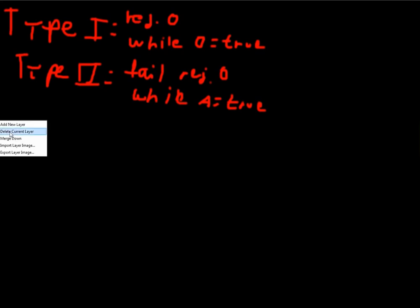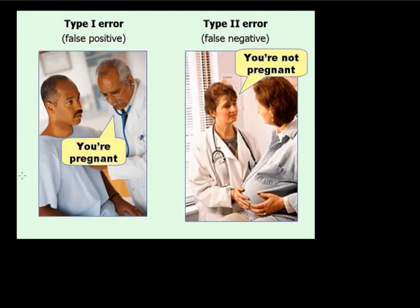A great way to remember this is this little picture right here. The doctor is testing for pregnancy. The null hypothesis would be the person is not pregnant, and the alternative hypothesis would be the person is pregnant. In the first picture, the doctor is falsely rejecting the null hypothesis of no pregnancy — he says the person is pregnant, while in fact it is true that the person is not pregnant. This is a man; a man cannot get pregnant. So he's committing a type 1 error — rejecting the null hypothesis of no pregnancy and therefore accepting the alternative hypothesis of pregnancy, which is obviously false.